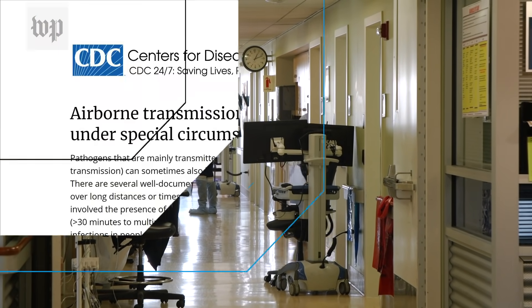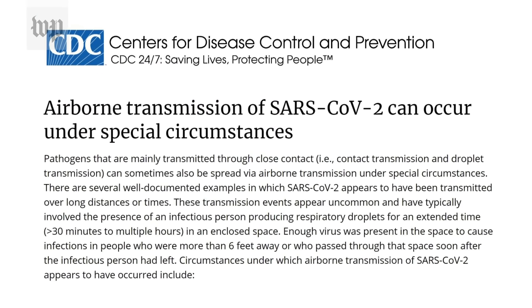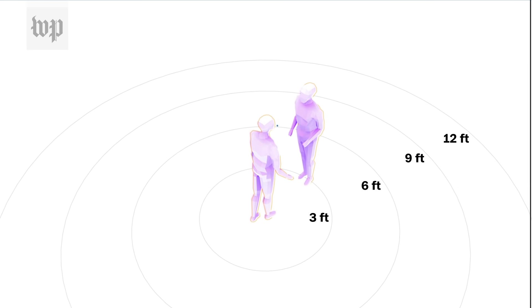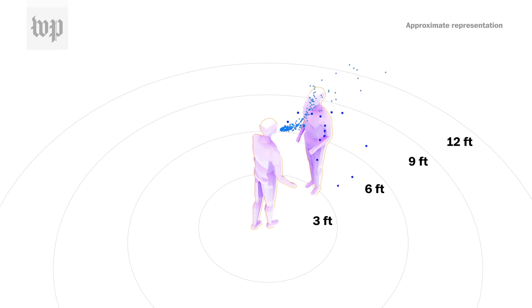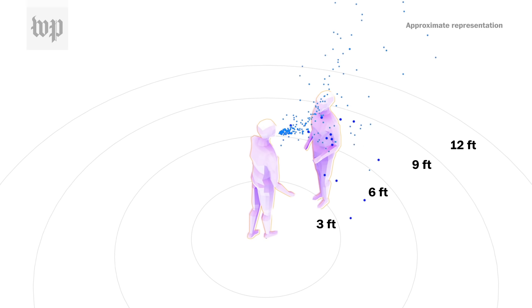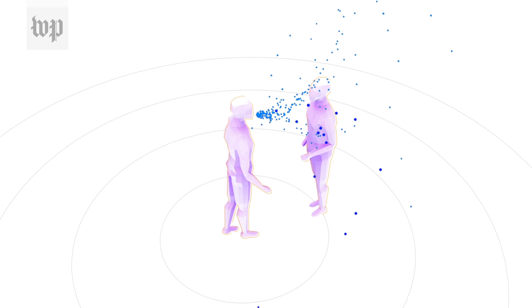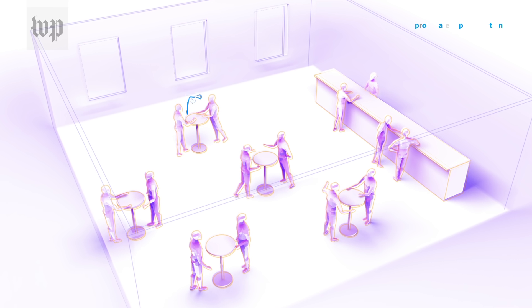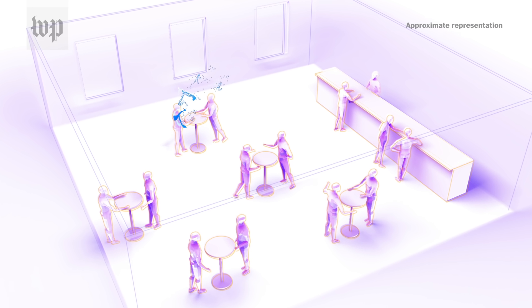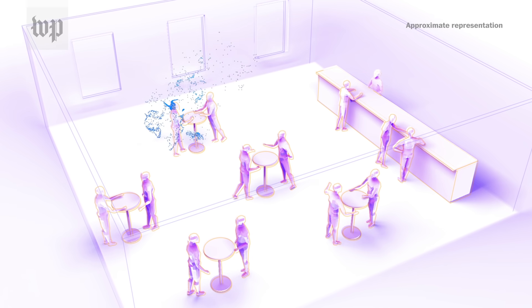In October, the Centers for Disease Control revised and expanded its guidelines and acknowledged that the virus can spread through small airborne droplets that we exhale and can sometimes travel distances greater than six feet and remain in the air for hours. The agency said the risk of transmission increases in enclosed spaces and those with poor ventilation.